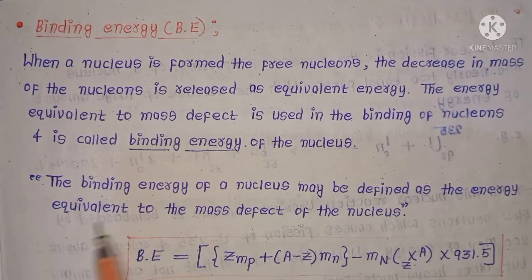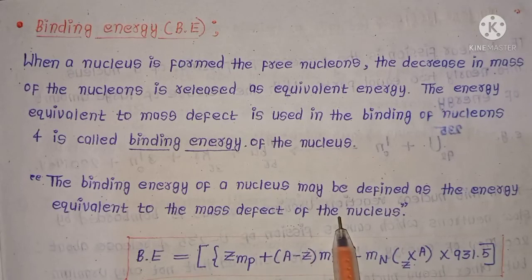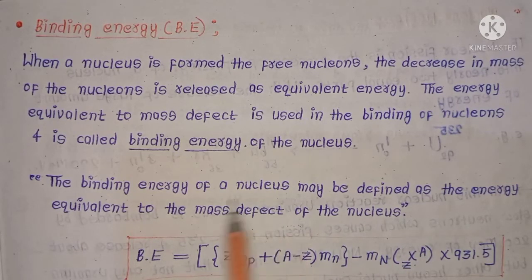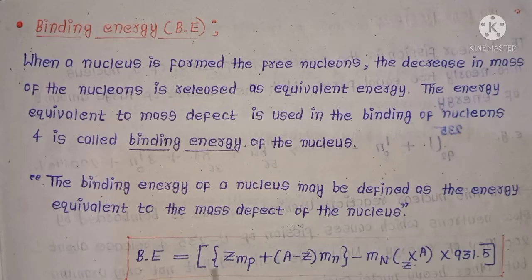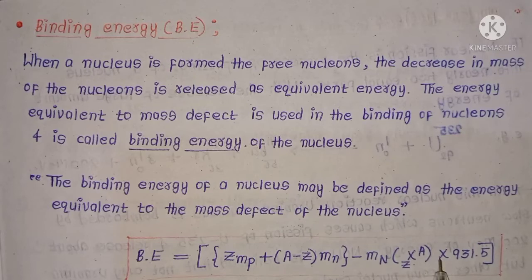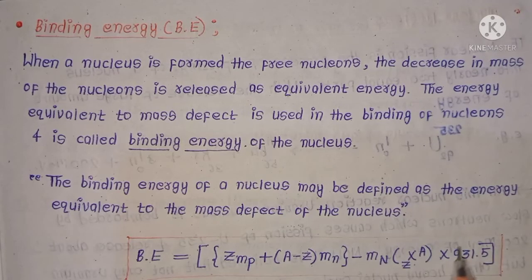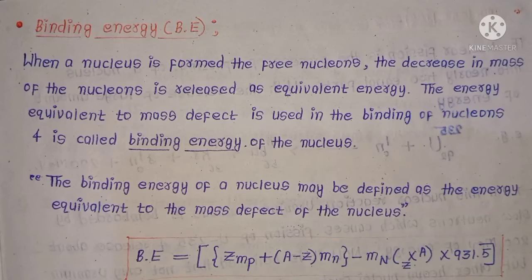Since binding energy is equivalent to mass defect, the expression for binding energy is: BE = [Z·mp + (A − Z)·mn − mn(X, A)] × 931.5 MeV. This is the amount of energy required to bind the protons and neutrons inside the nucleus, and it is called binding energy.